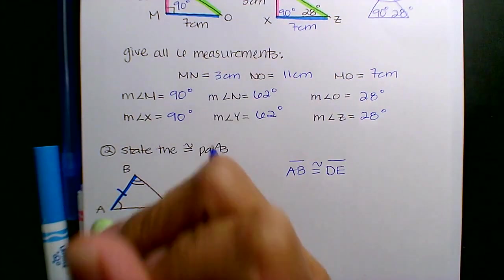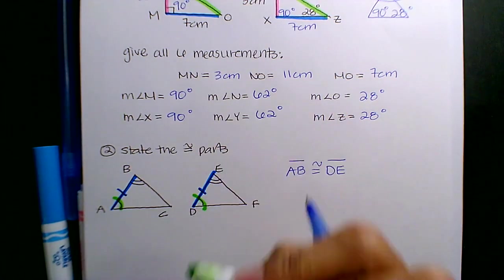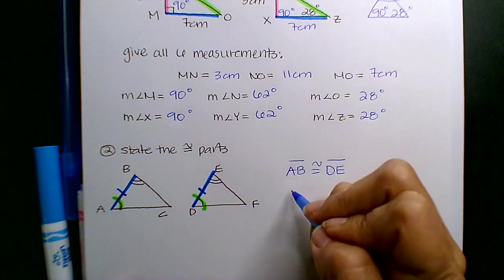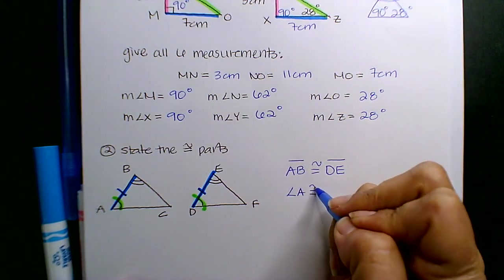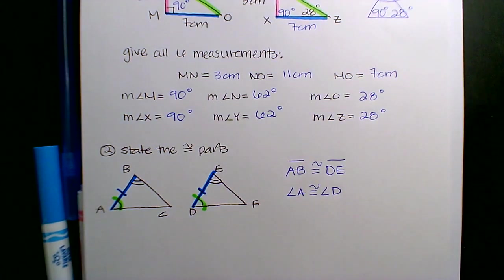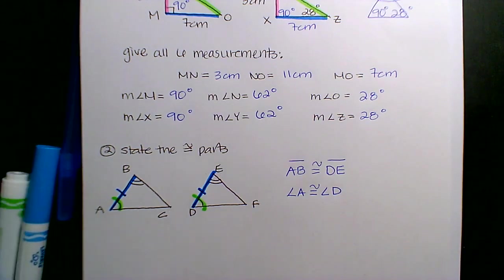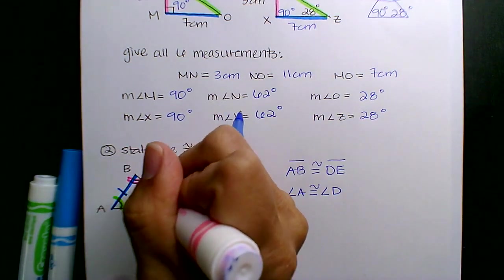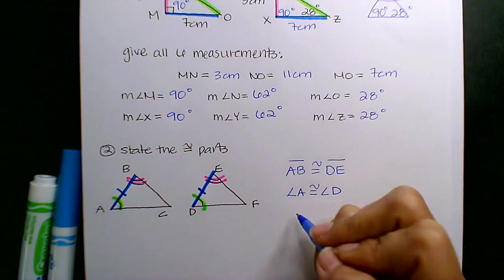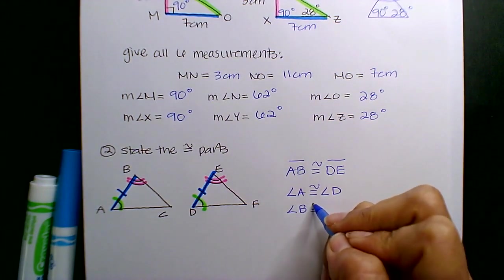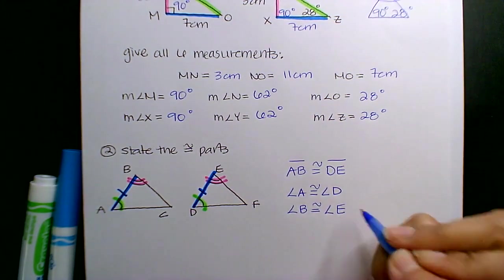And then if I read my arcs, one arc, one arc, so that means angle A is congruent to angle D. And if I read my double arcs, two arcs, two arcs, angle B is congruent to angle E.